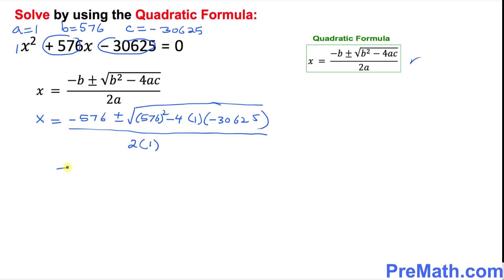Let's simplify this one. So I can write negative 576 plus or minus square root of 576 squared equals 331776. Be careful with these calculations. You can use a calculator if you wish to. And over here on this side, negative and negative become positive. And when you multiply 4 times this big number, that's going to give you 122500 divided by 2 times 1 is 2.